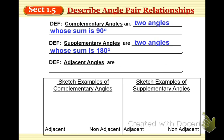And then we have the idea of adjacent angles. Adjacent angles are two angles that share a common vertex and side. They've got to share a common vertex and side.